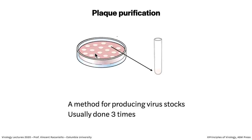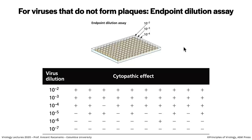We often use plaque assays to purify and make clonal virus stocks — it's called plaque purification. You do a plaque assay, and you can often see the plaques without staining. You take a pipette, plunge it into the agar above a plaque, pick up some of the virus, resuspend it in buffer, and repeat this a few times. If you took a nasal wash from a patient and plaqued it out, you couldn't rule out that two viruses were accidentally making one plaque, so you do this multiple times to get a purified stock.